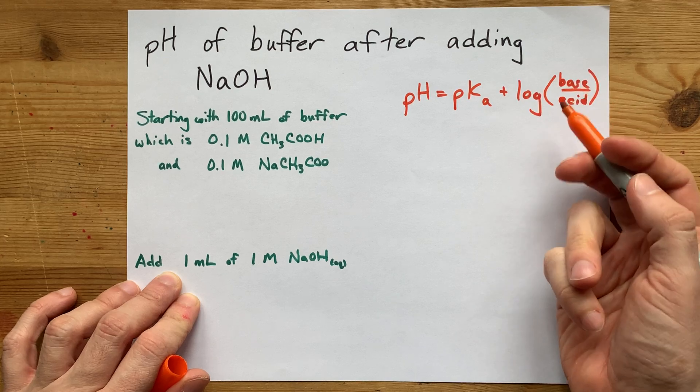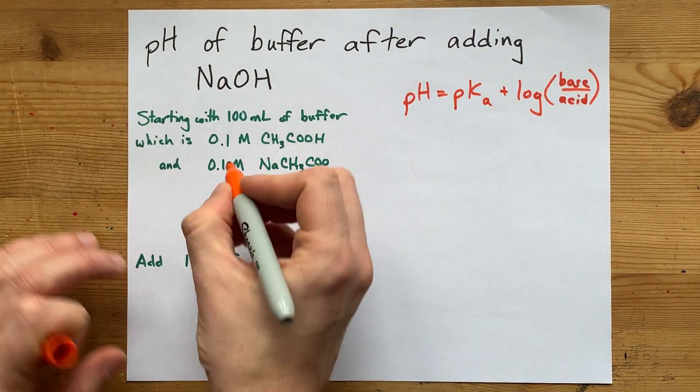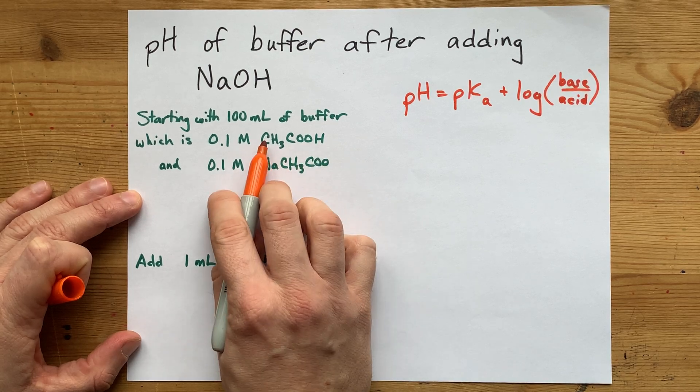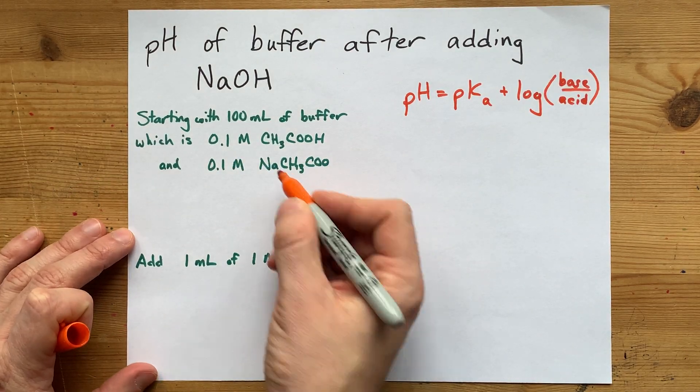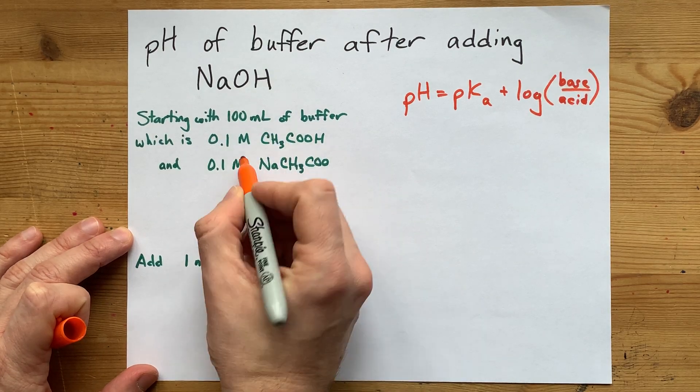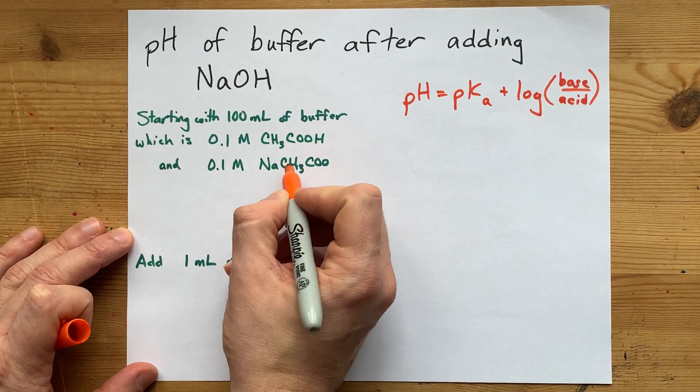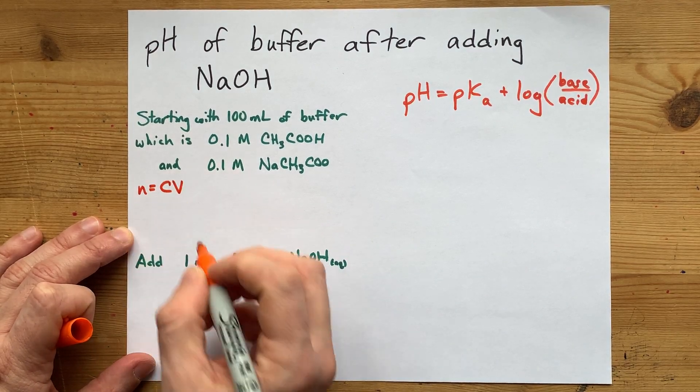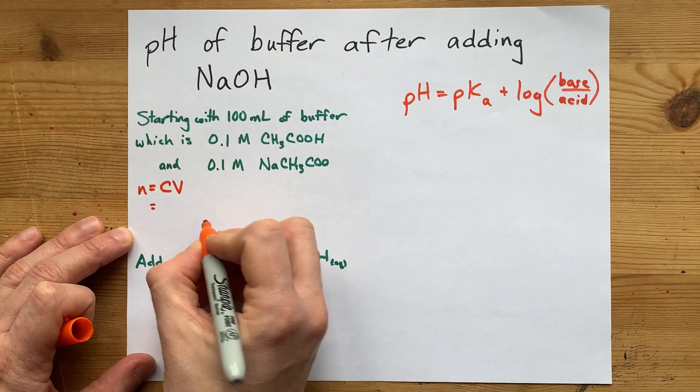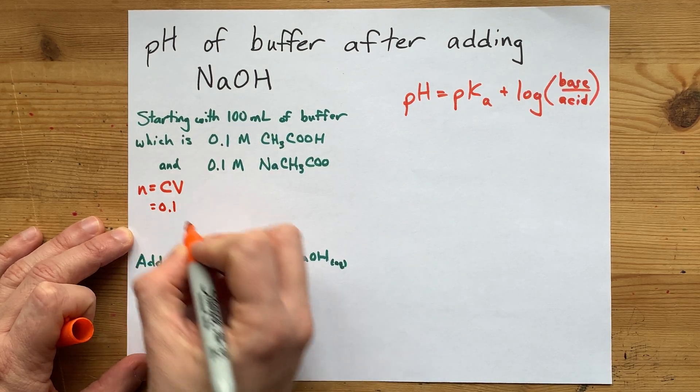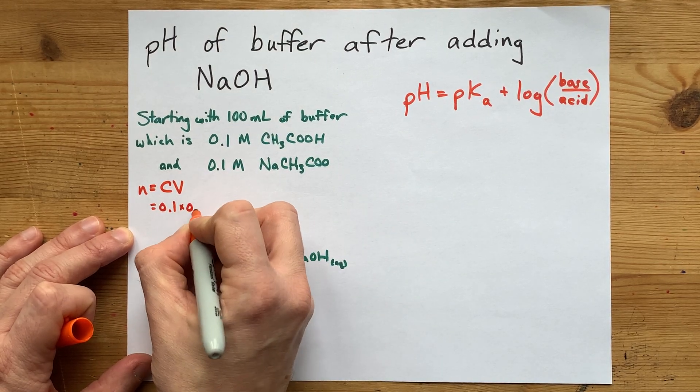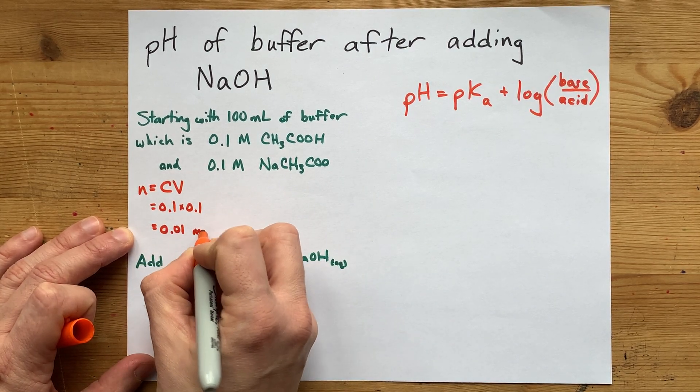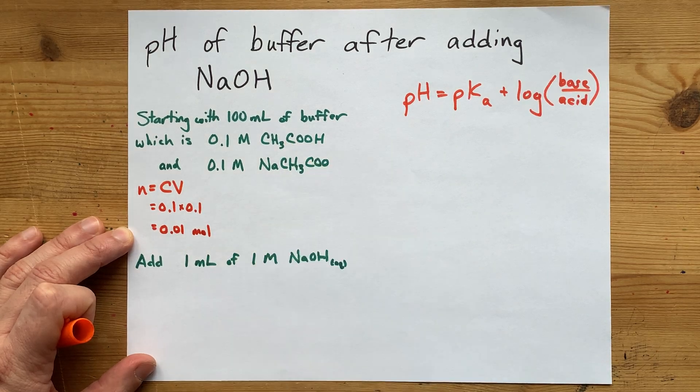I'm going to show you what happens to those numbers of moles. But first, I need to figure out how many moles of weak acid and conjugate base I do have here. It's 100 milliliters of buffer, and it's got this concentration of both acetic acid and sodium acetate. The number of moles of each is concentration times volume. The concentration is 0.1 moles per liter.